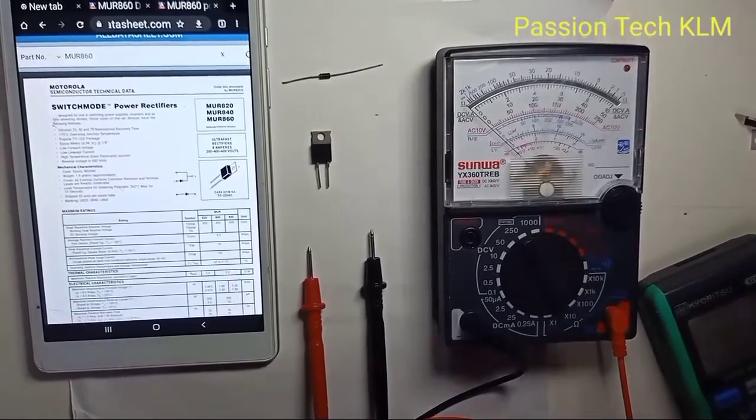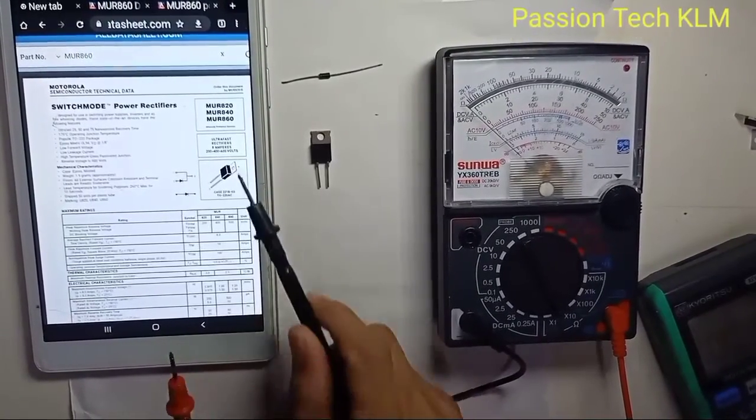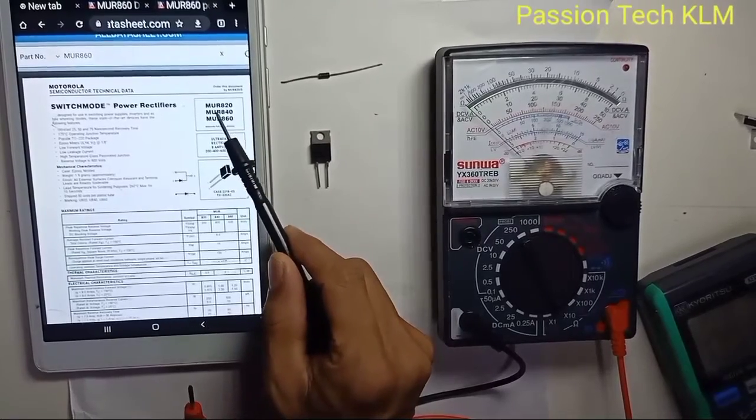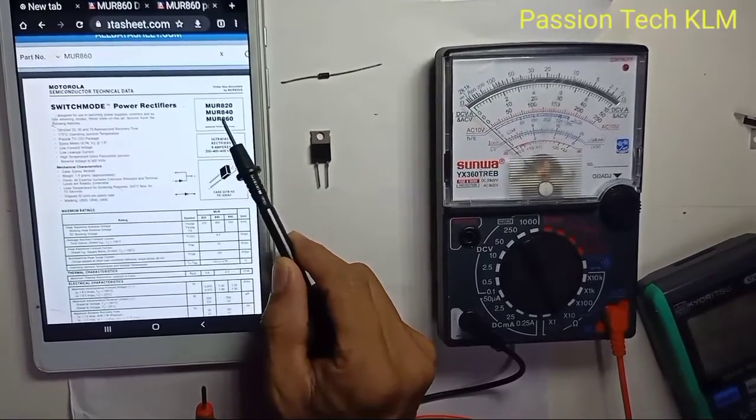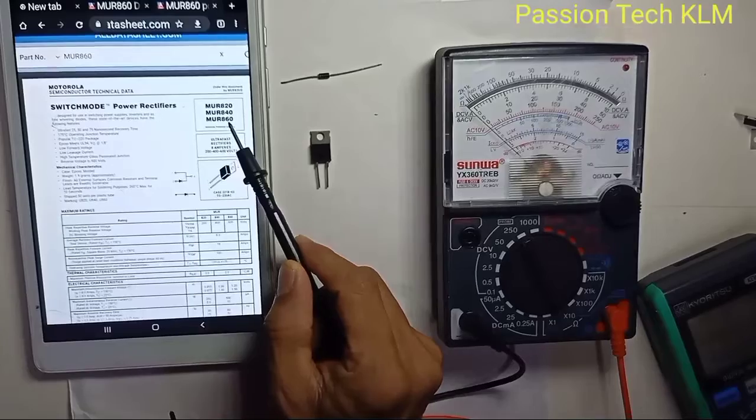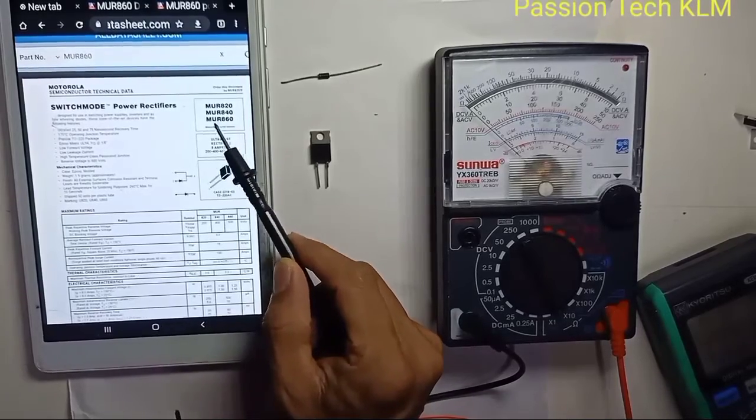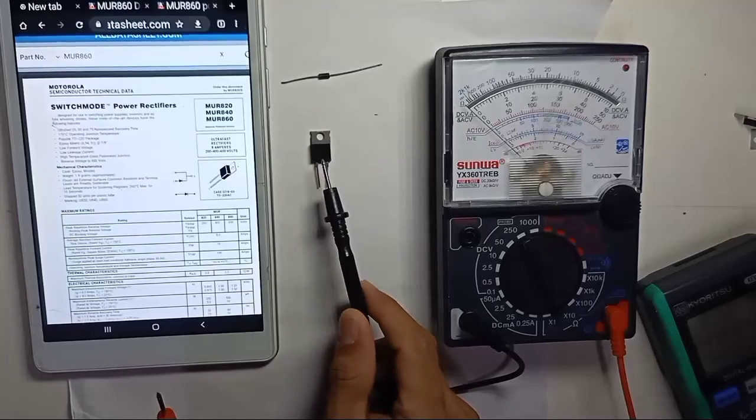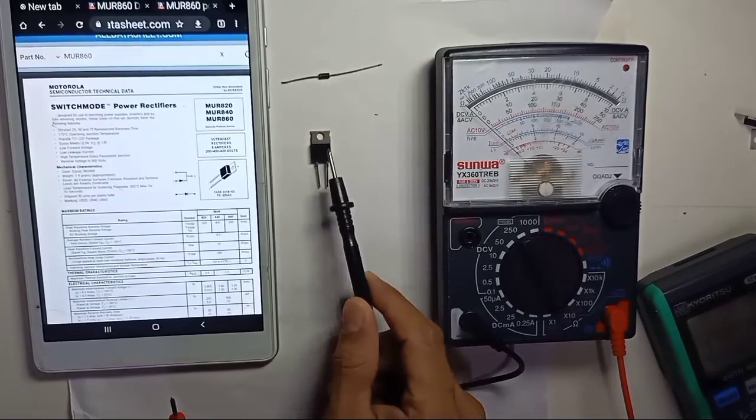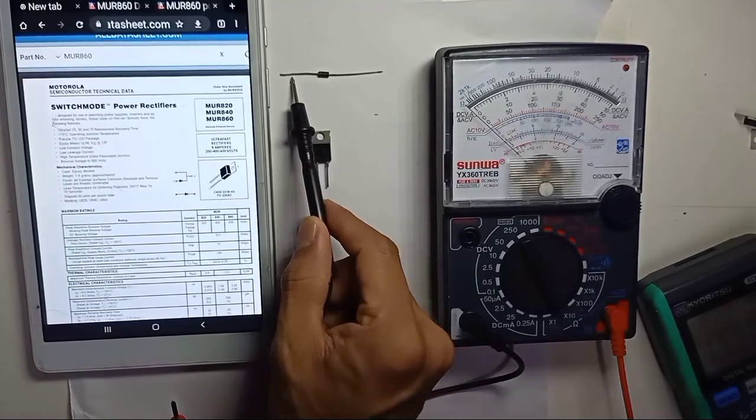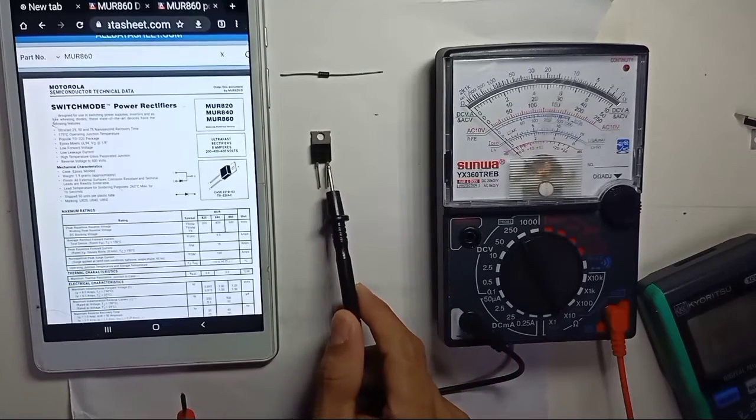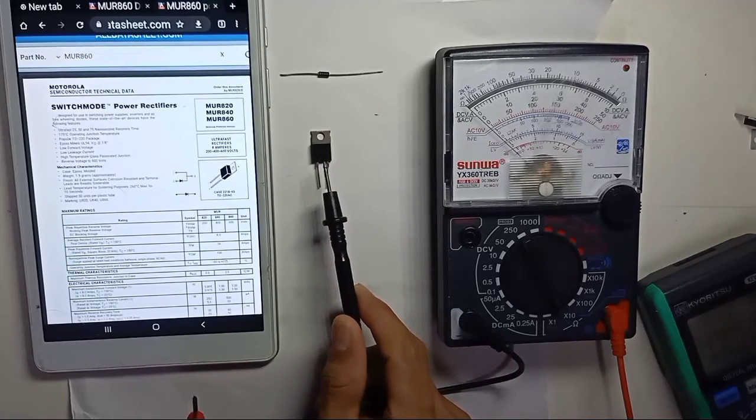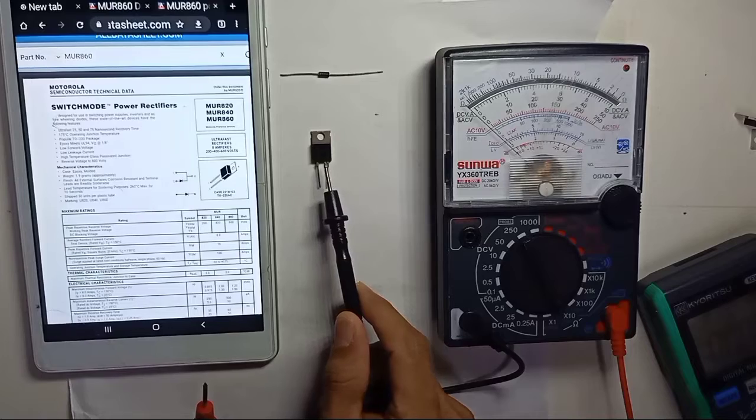Okay guys, for this video I would like to share how to check MUR820, MUR840, and MUR860. All these are switch mode power rectifiers and basically this is an ultra-fast diode. There are many types of diodes and this is one that can hold high amperage. The normal diode is you will see this is the normal diode package that we always see.